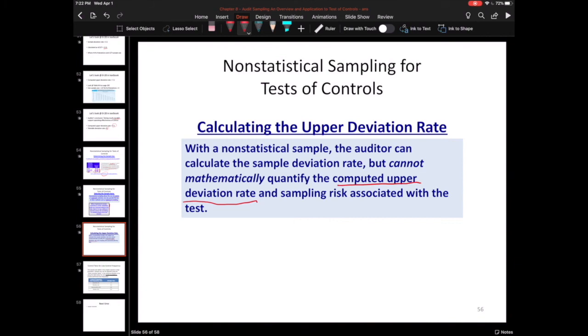And when you cannot quantify sampling risk, you also cannot mathematically quantify the computed upper deviation rate. So that's the big disadvantage there. Whereas with statistical sampling, you can quantify sampling risk, you can quantify mathematically that upper deviation rate. And so then you can compare it to your tolerable. All you can really do with non-statistical is you can compare the error rate you find to your expected or historical. Usually your expected always has to be zero errors. So if you basically, if you find anything more than zero errors in non-statistical, you often have to fail the control or radically increase your sample size.